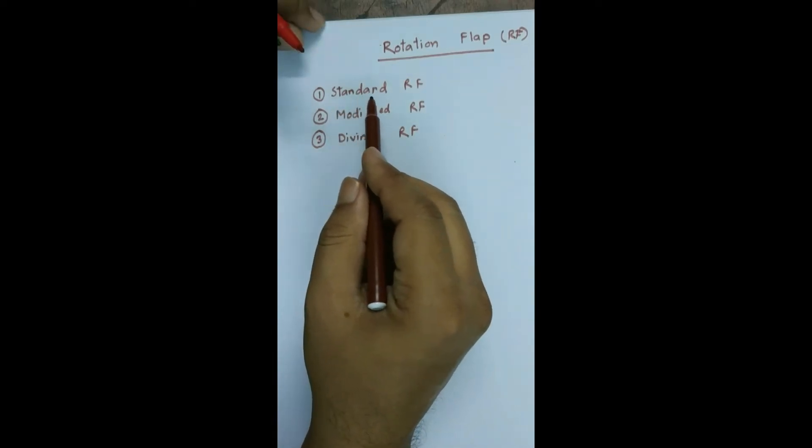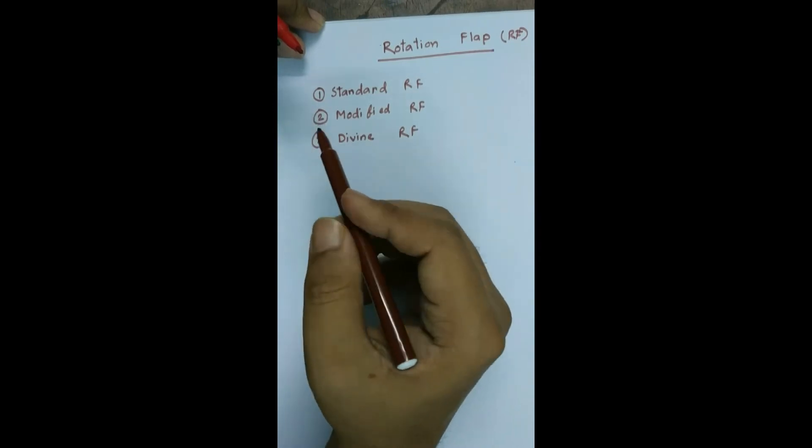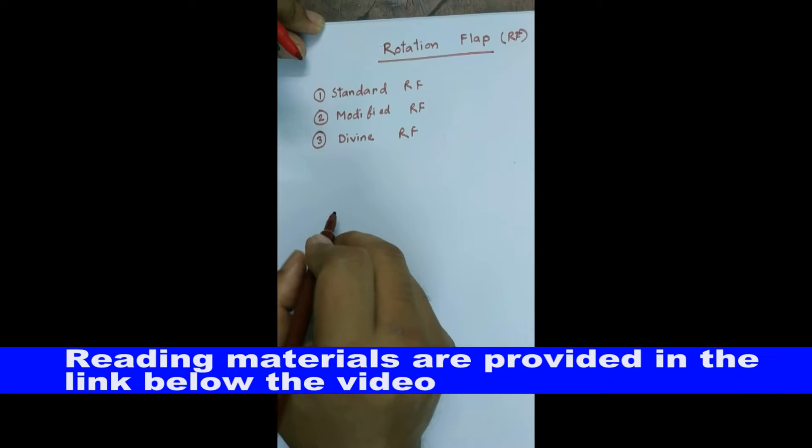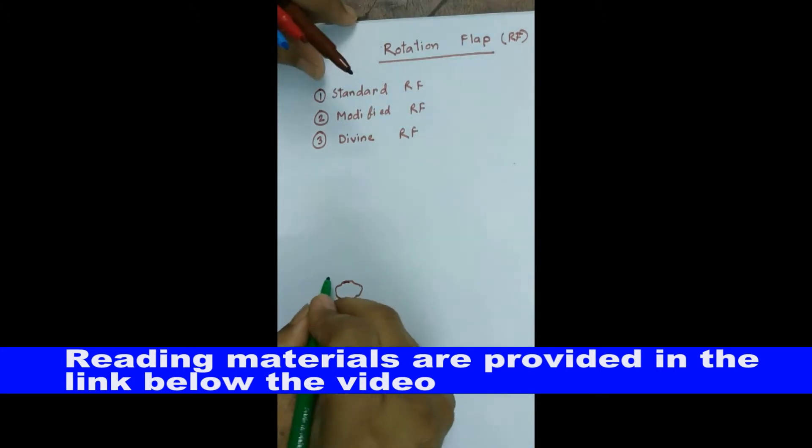We are going to discuss how to draw the standard rotation flap here. The other two will be discussed in a separate video. So first we assume that there is a less than 6 cm scalp defect here. Now we convert this defect into isosceles triangle.